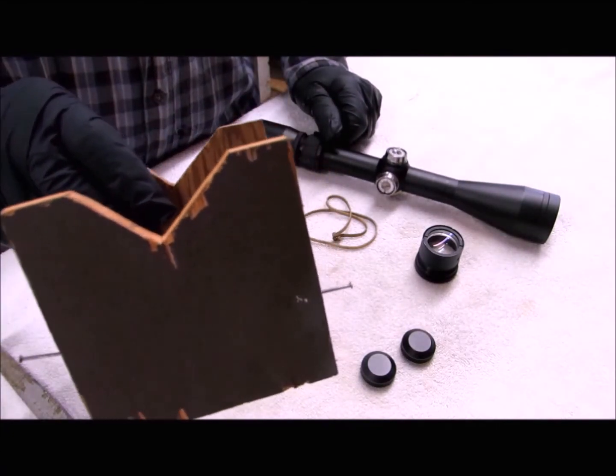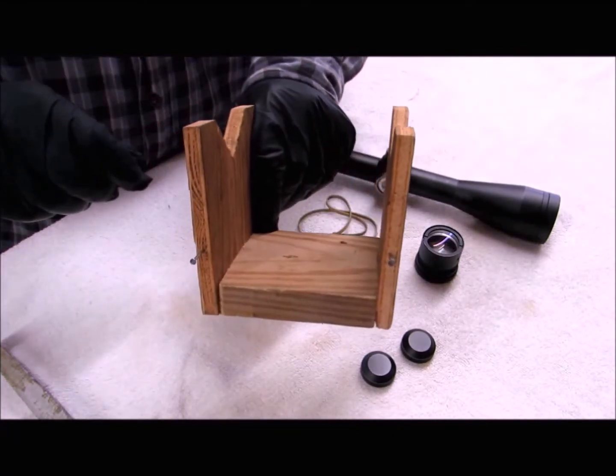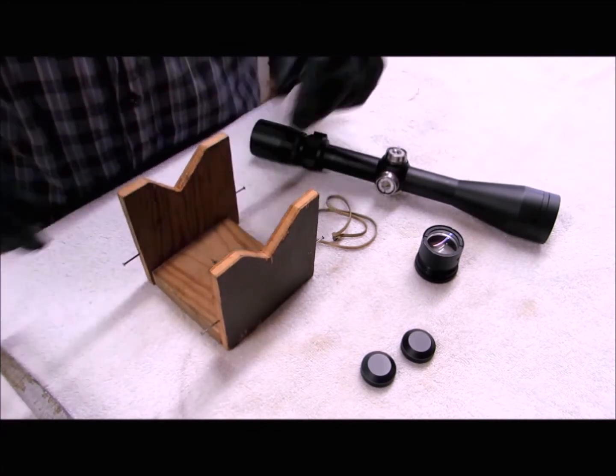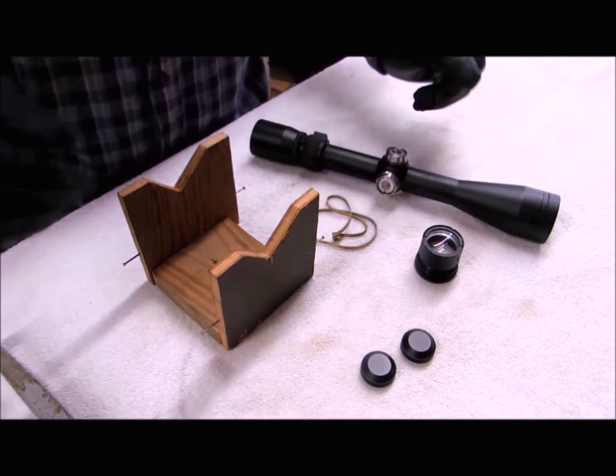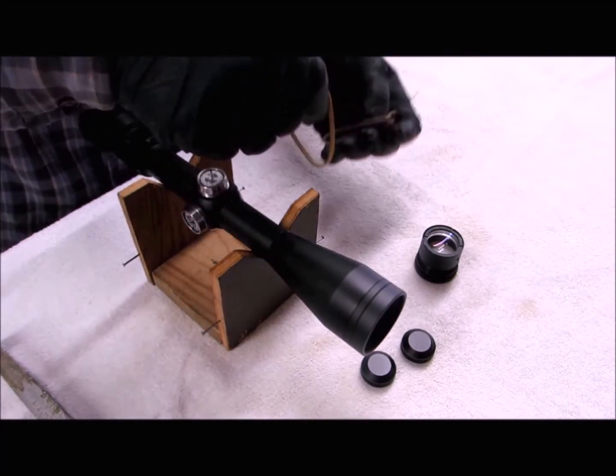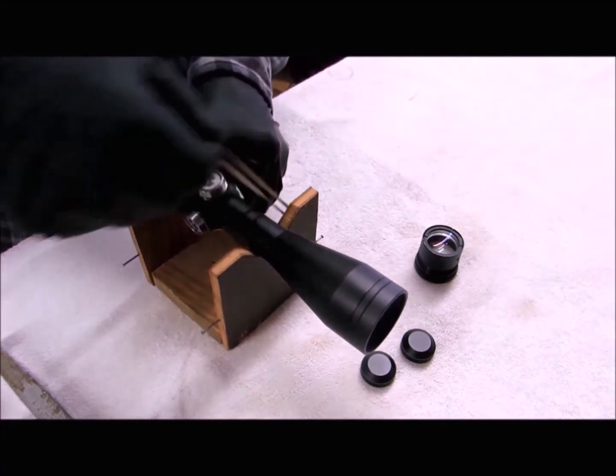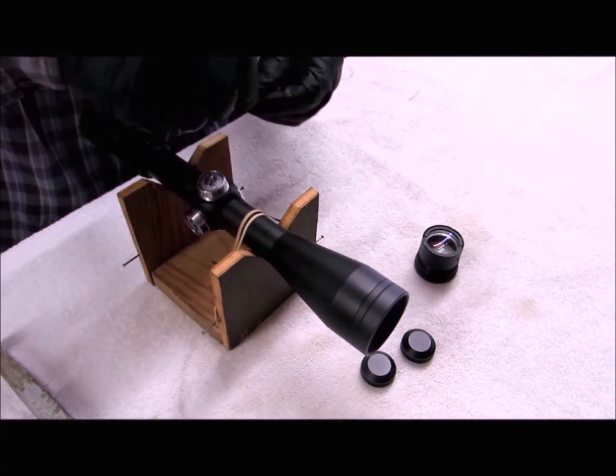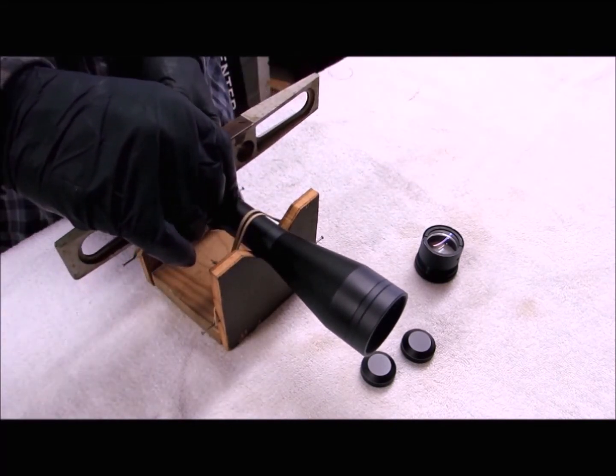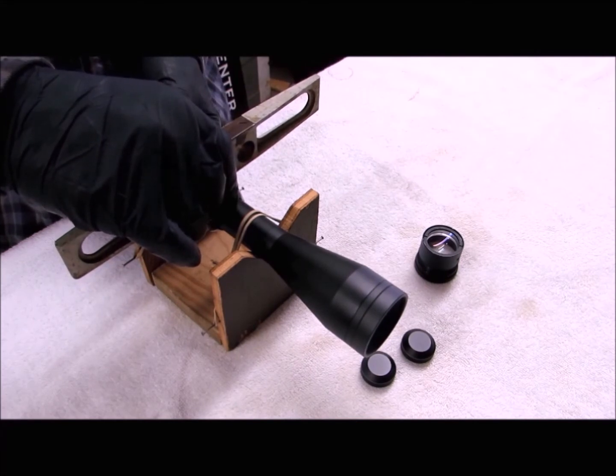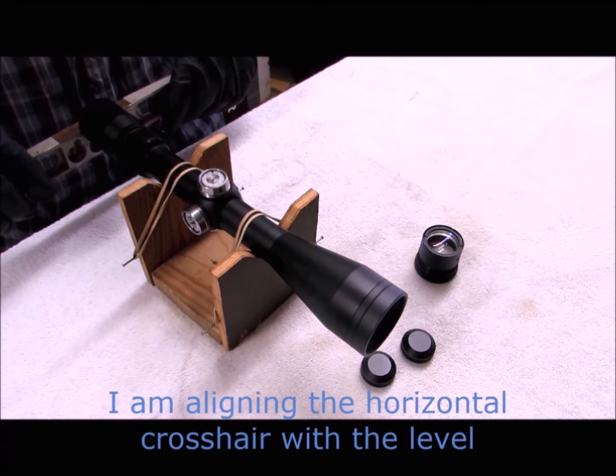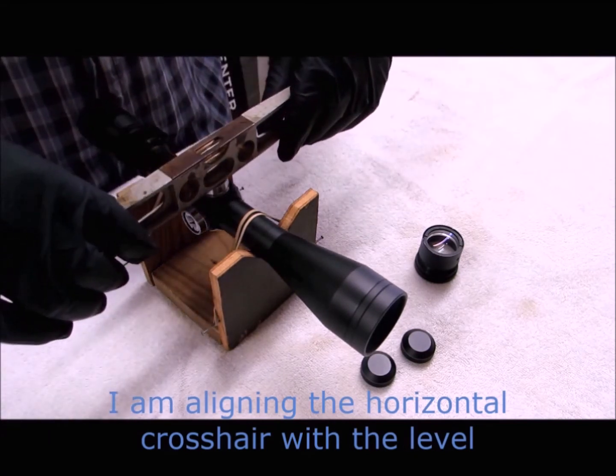To do that, I've made a jig. I've just sawn a V-shape in two pieces of wood and attached them to a block. I have some nails around the side. I clamped this jig to my workbench so I can look through the scope. I use a couple rubber bands to hold the scope in the jig. I level the scope using my elevation turret. I then sight over my level and adjust my reticle. This sometimes takes several attempts.